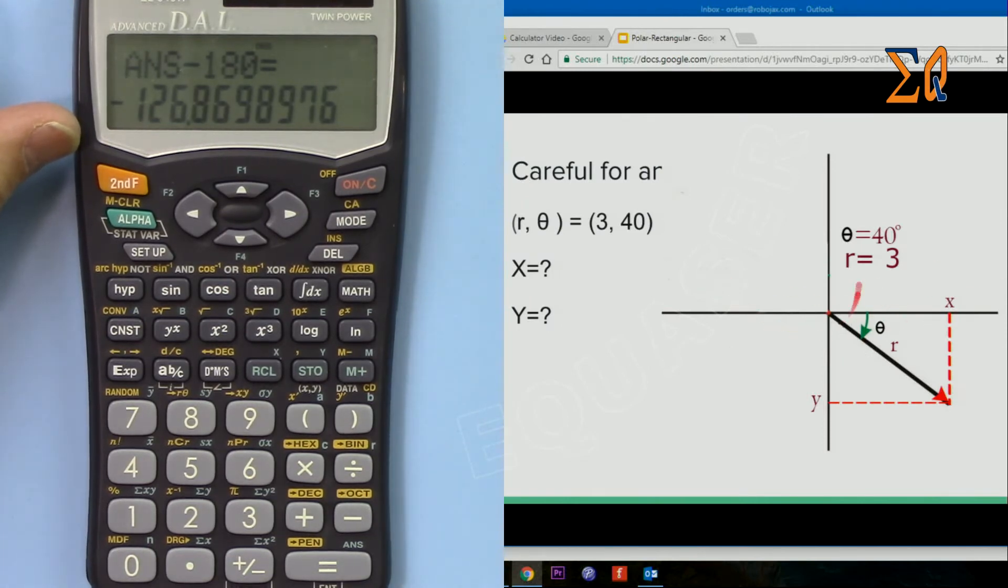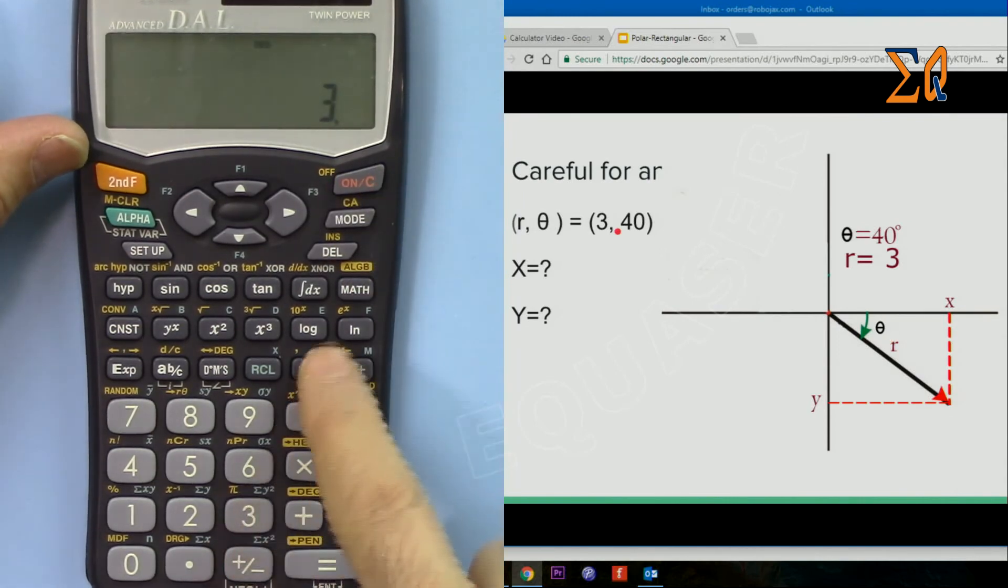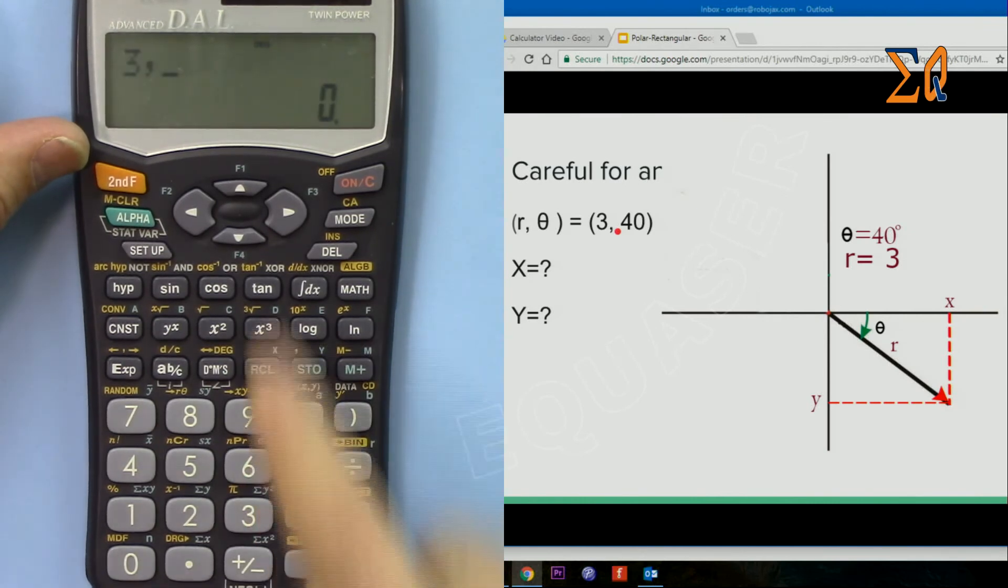So now let's say we have the angle, this theta is 40 degrees, and r is 3. We want to find the rectangular X and Y. Now pay attention, this is minus 40. The angle is 40 degrees, but with the convention you have to treat it as minus 40. So 3, second function comma, now we have to enter minus 40. For minus 40, we have to open a parenthesis, minus 40, close the parenthesis.